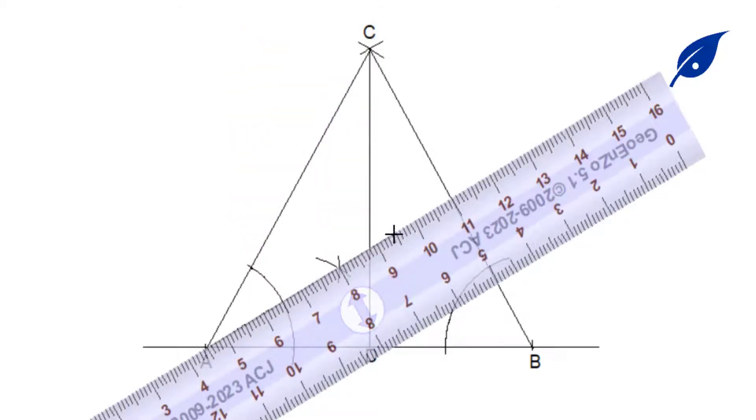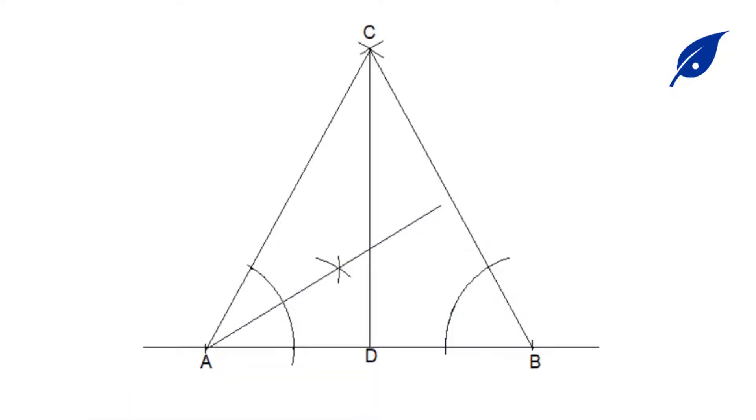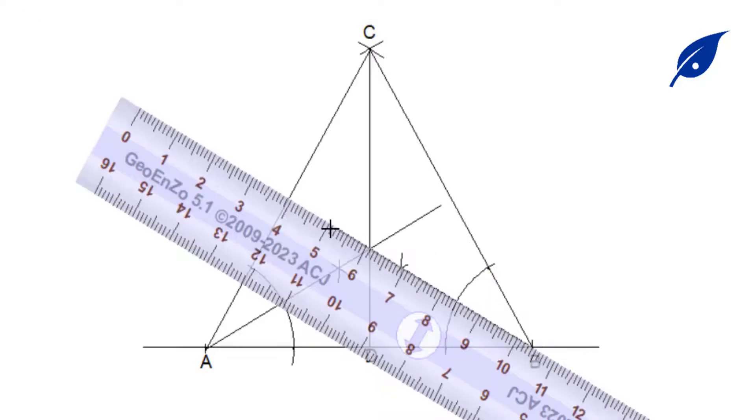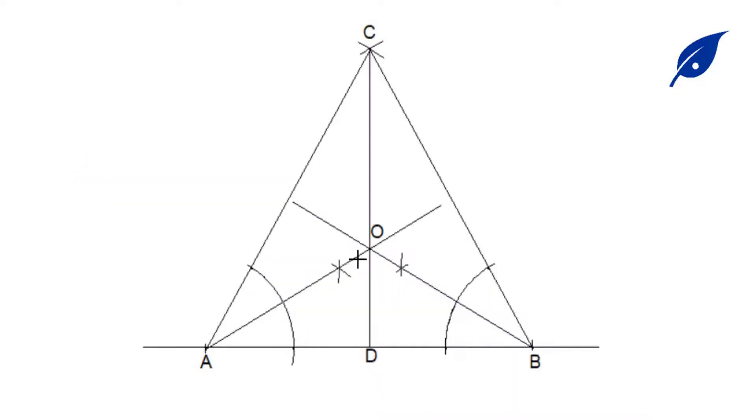Now we connect the point. The next thing is to bisect the angle DBC. Where they meet, we'll call it O.